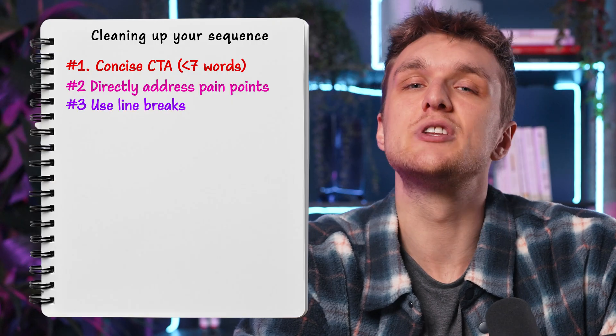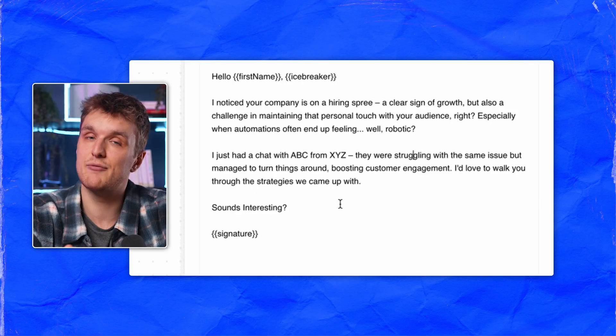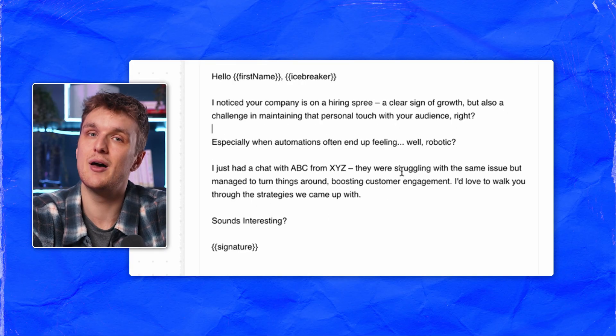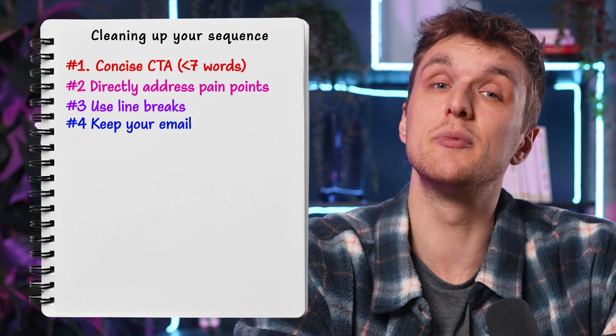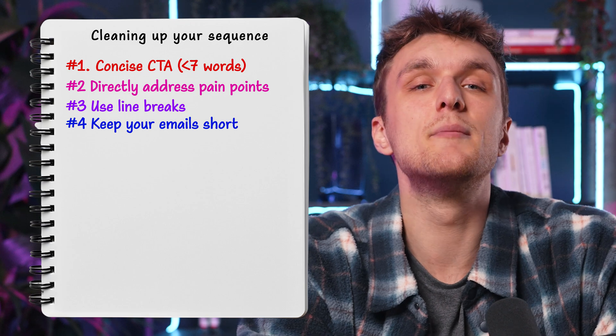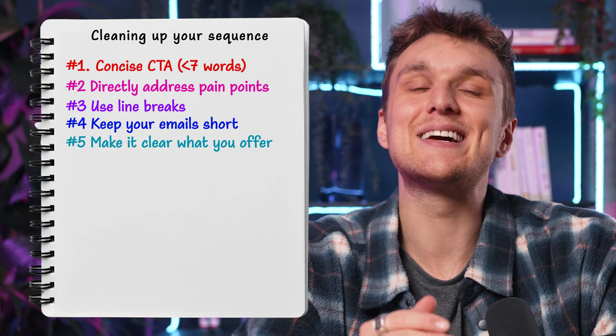Rule number three: use line breaks after every sentence for clarity — after every sentence. Emails and LinkedIn have the same rule. Rule number four: keep your emails short, between 50 to 100 words. Do you read super long emails? Your prospects don't either. Rule number five: make it clear what you offer. Tell them what you do, otherwise they won't know.